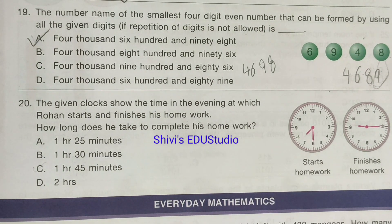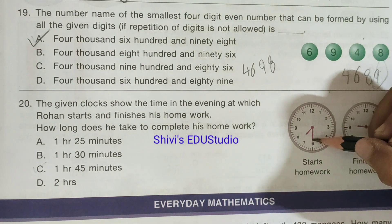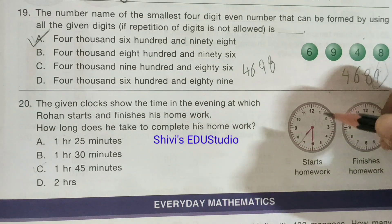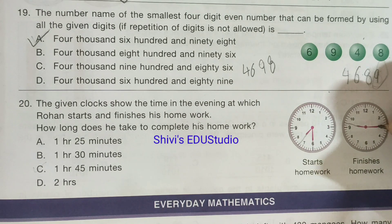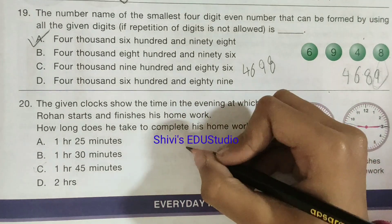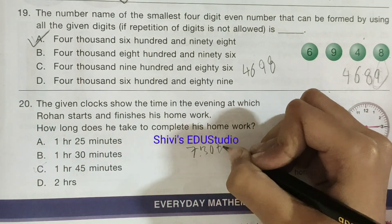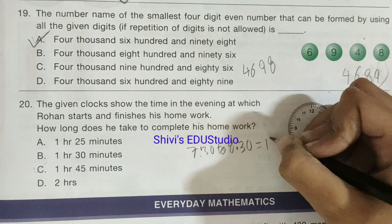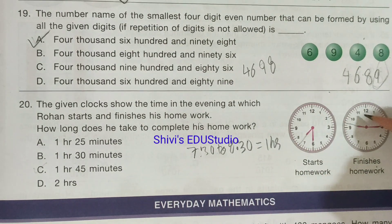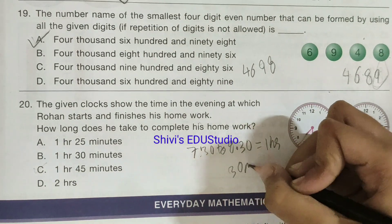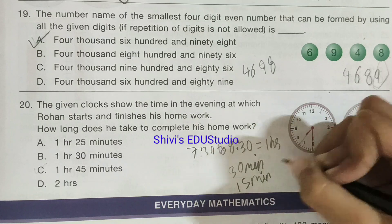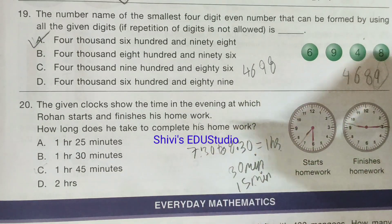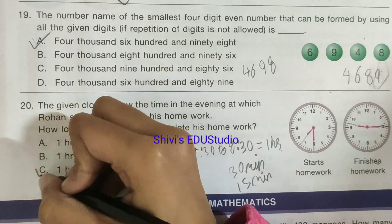Question number 20: The given clock shows the time in the evening when Rohan starts and finishes his homework. How long does he take to complete his homework? The answer is one hour and 45 minutes — that is 30 plus 15 equals 45 minutes past one hour. Option C is the correct answer.